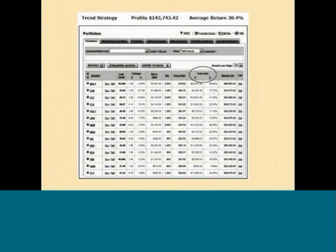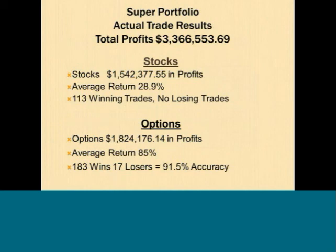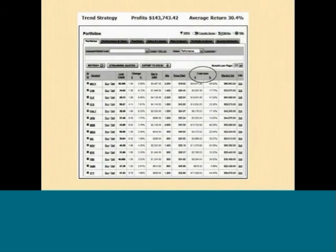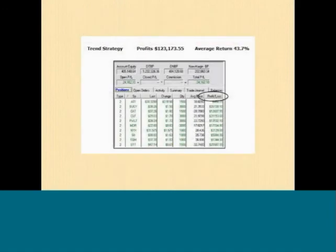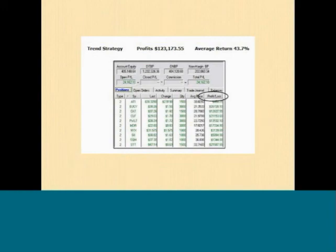I calculated my super portfolio results over the last several years. In my stock portfolios, I had over $1.5 million in profits. In my option purchase portfolios, I had over $1.8 million in profits for these super portfolio stocks. I'll run through my brokerage account statements — in the stock portfolios, that's over $1.5 million in profits, an average return of 28.9%, with 113 winning trades and no losing trades. Here's the first snapshot of a portfolio with $143,000 in profits and an average return of 30%.